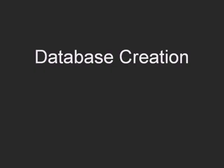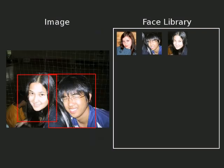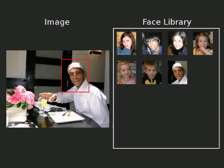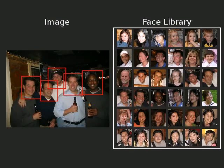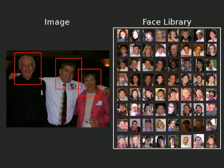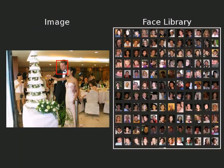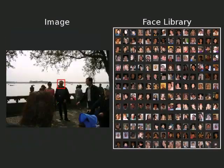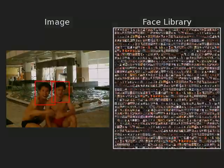We have collected a dataset of over 4.5 million images downloaded from the internet. We use a commercial face detector to extract the faces from each image. By downloading from a wide variety of sources, we have found that about one-fourth of all images contain faces, with an average of one face per two images.